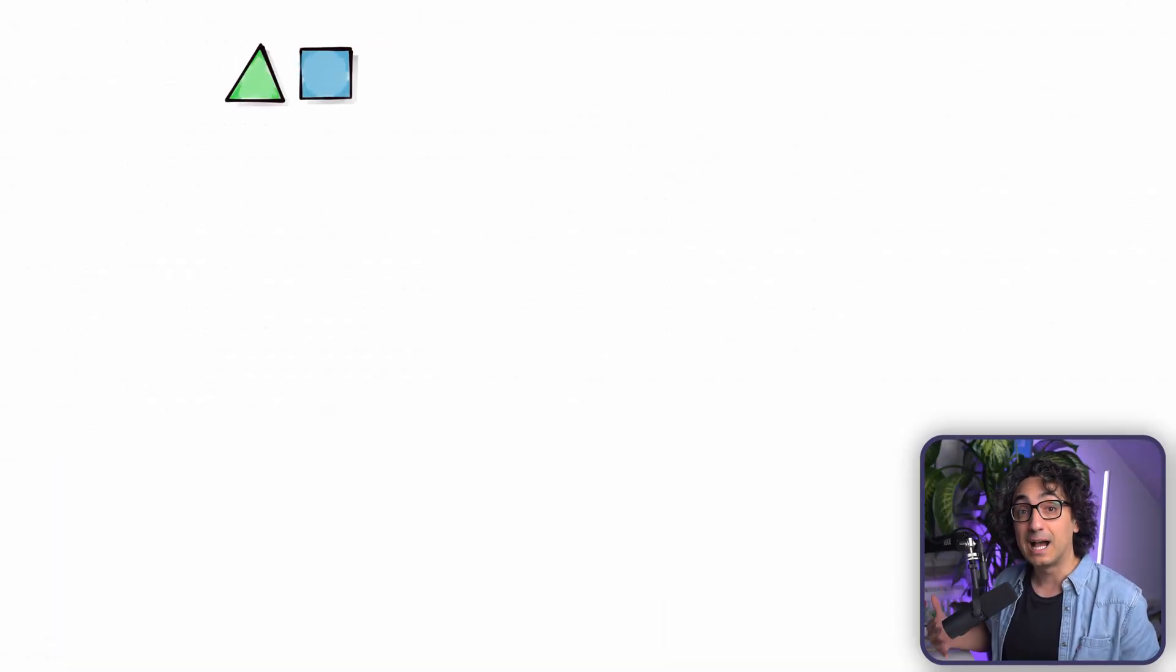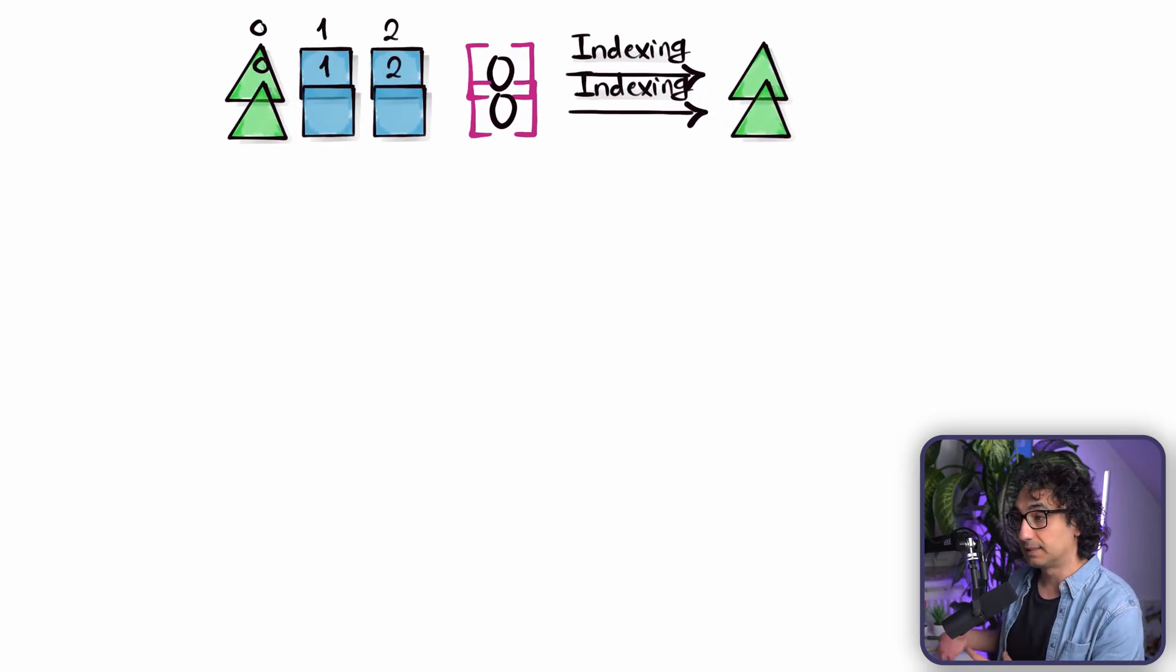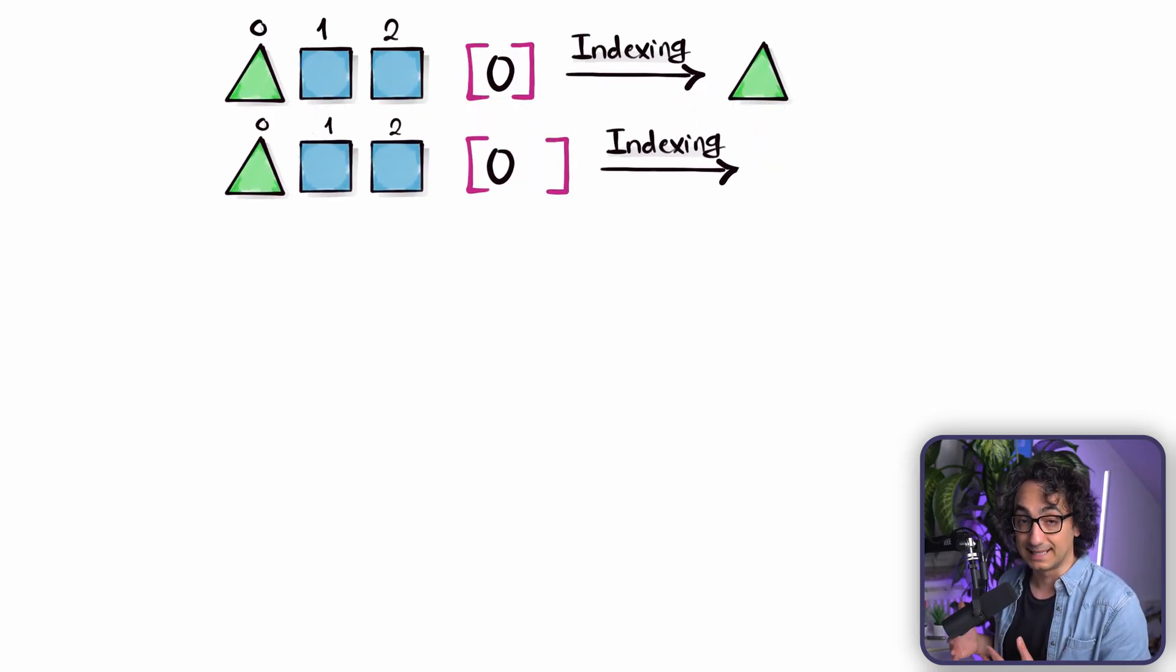So are you ready? Let's go. The first thing we can do is how to access a list. You can go and pick directly one by using parentheses and specifying the position number. So we call this indexing. You are getting exactly one item.